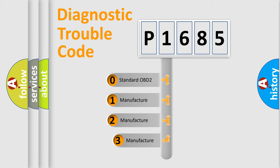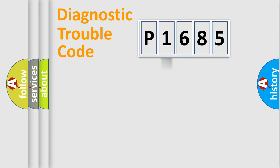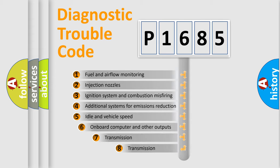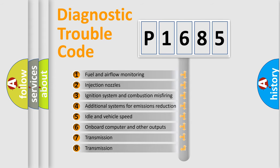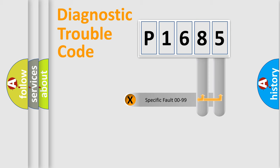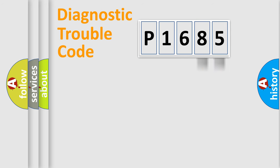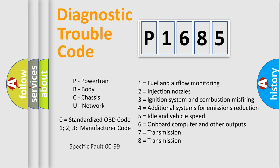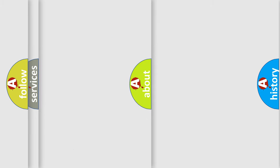If the second character is expressed as zero, it is a standardized error. In the case of numbers 1, 2, or 3, it is a more specific expression of a car-specific error. The third character specifies a subset of errors. This distribution is valid only for the standardized DTC code. Only the last two characters define the specific fault of the group, and this is valid only if the second character is expressed by the number zero.